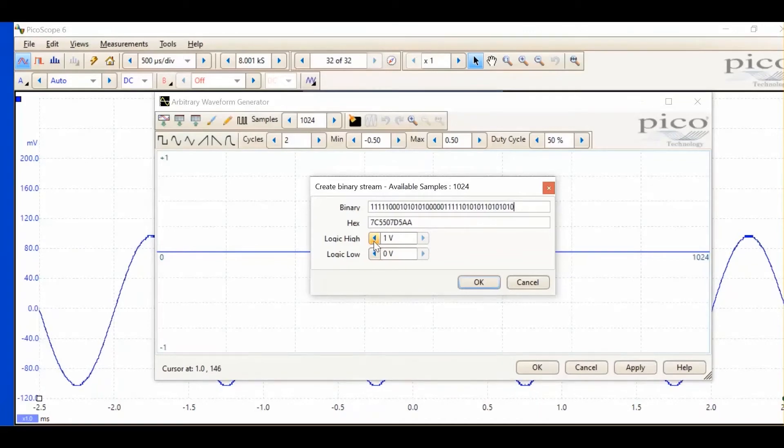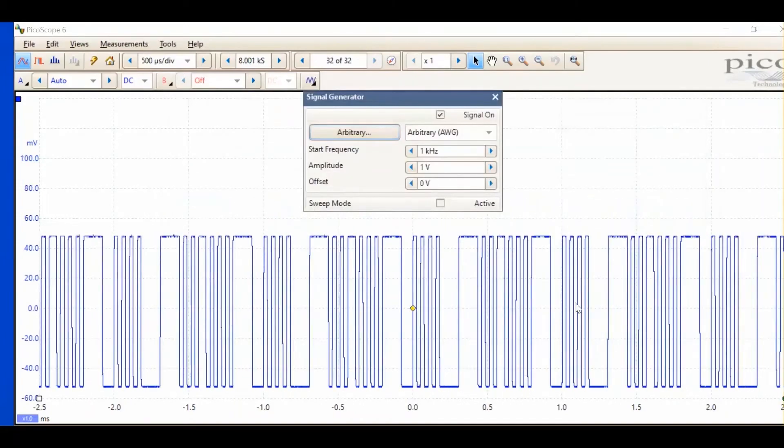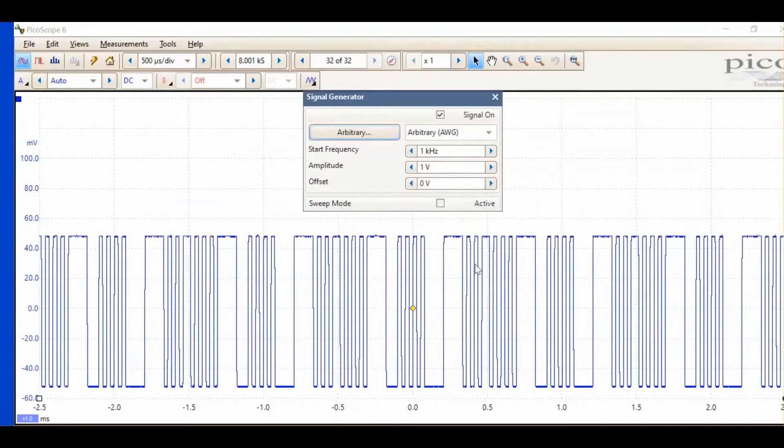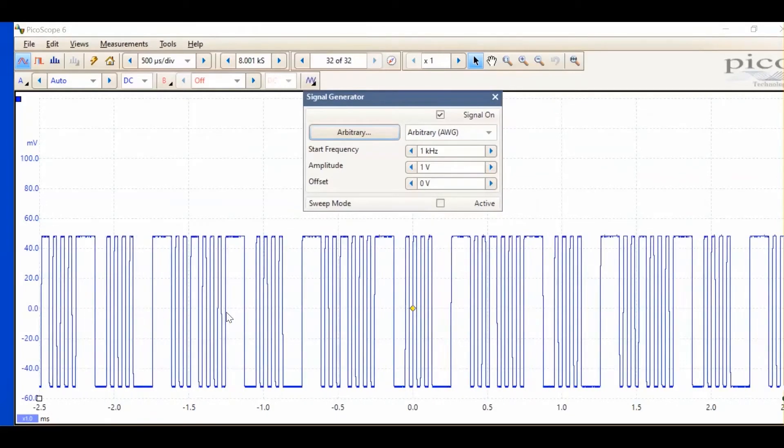We can set the logic levels. There. And if I go OK, we can see that setup in the generator. And if I now press OK, this exports it. And we can see that bitstream is now displayed in the oscilloscope.